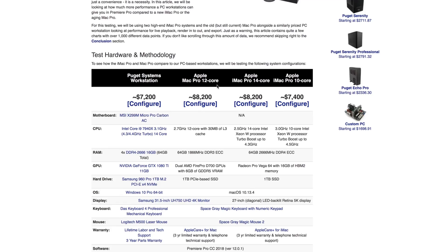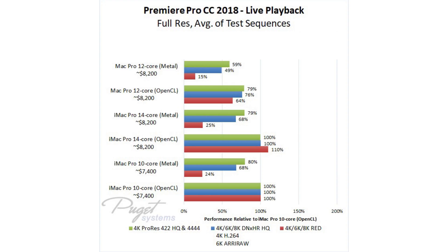We have a 12-core Mac Pro, a 14-core iMac Pro, and a 10-core iMac Pro. Both of those are going to be tested on Metal and OpenCL. The baseline for our graph is the 10-core iMac Pro using OpenCL, so anything with a lower percentage is less powerful and anything with a higher percentage is more powerful than that baseline.